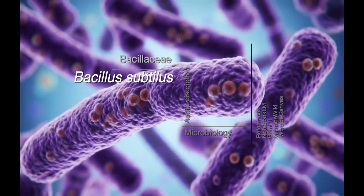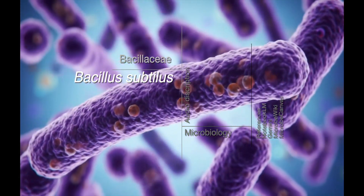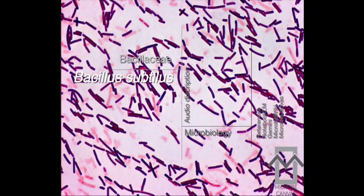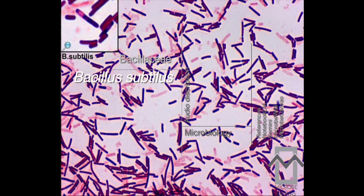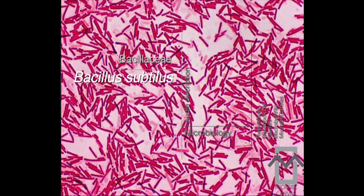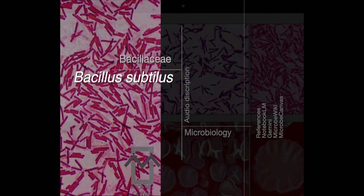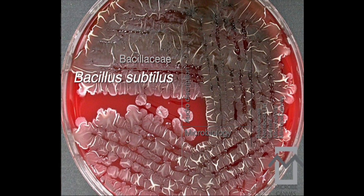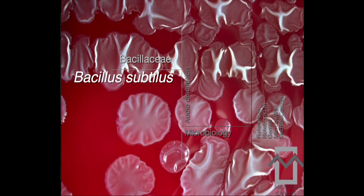Now for biochemical characteristics. B. subtilis is typically motile, forms spores, is catalase positive, VP positive, and reduces nitrate. It also hydrolyzes gelatin, esculin, casein, and various tweens, showing it has various enzymes. It's quite metabolically active, producing acid from a whole list of sugars: glucose, fructose, mannose, maltose, trehalose, sucrose, xylose, and others like glycerol, mannitol, and starch — very versatile, which probably helps it survive in lots of different environments.